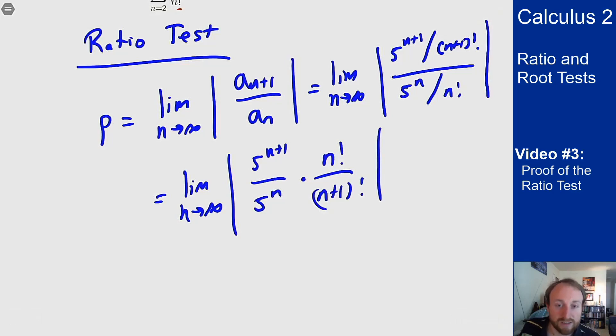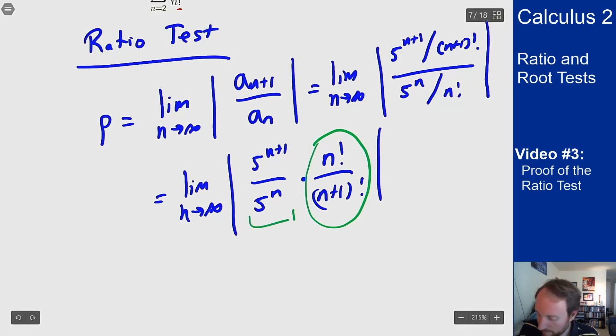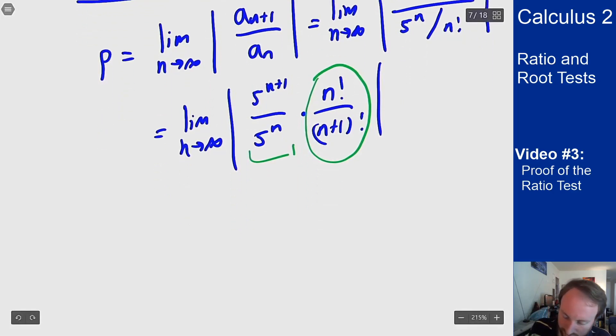And now we see why the ratio is so nice here, because this here just becomes 1/(n+1) because the factorial on the top cancels everything else on the bottom except for the n+1 term. And this becomes a 5 like before. So this becomes the limit as n goes to infinity of 5/(n+1), which is 0.